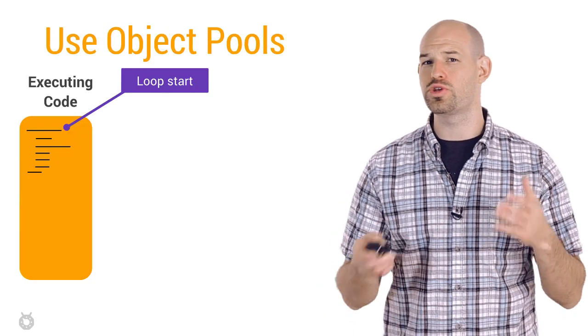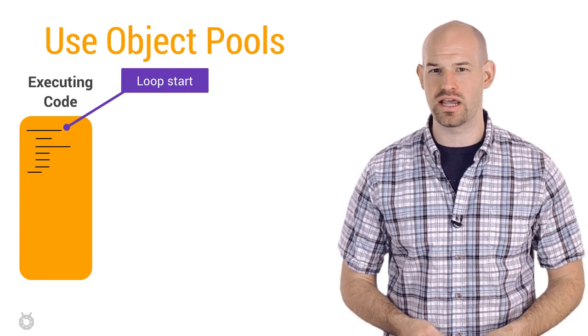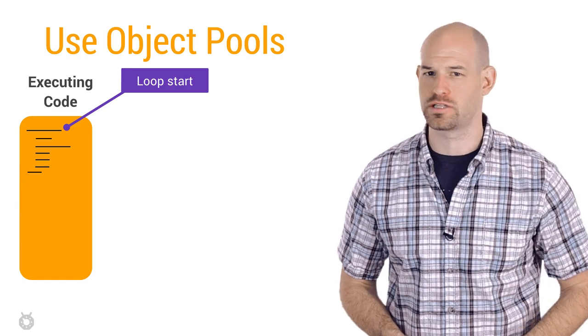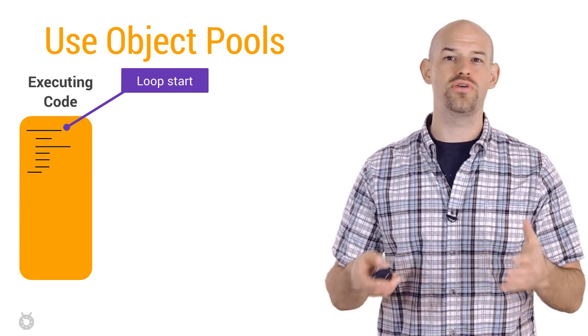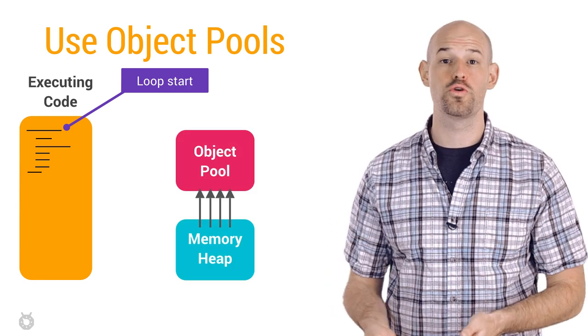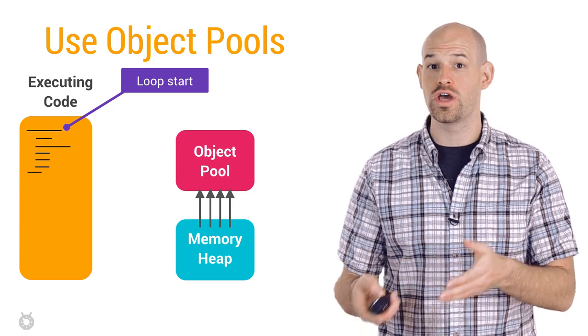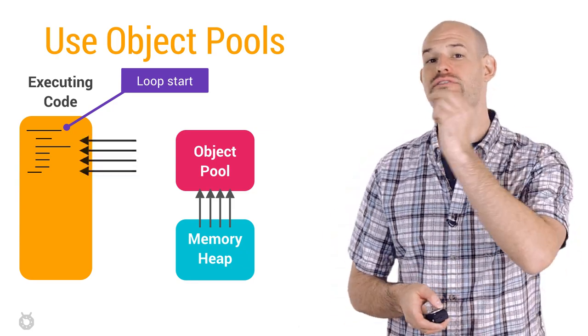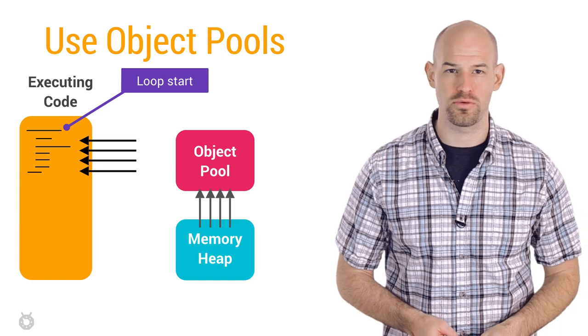Now, for situations where you can't remove the need to create new objects in these scenarios, consider using an object pool pattern. Effectively, you have an object pool that allocates a group of objects, and rather than having your code go to the heap each time, it instead grabs available objects from your memory pool.